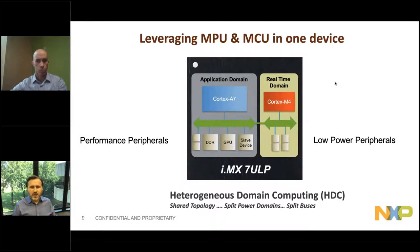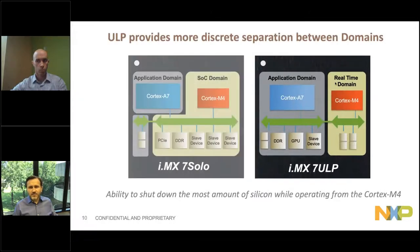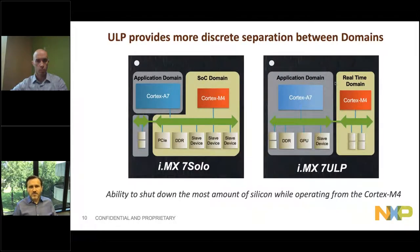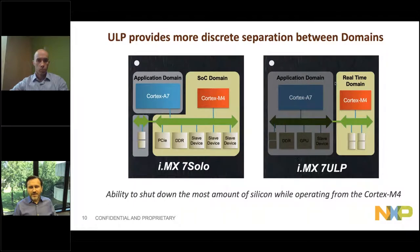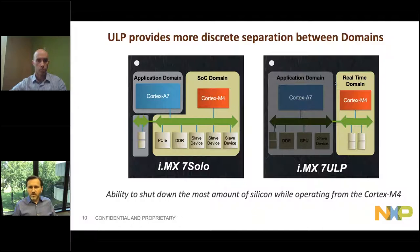This creates a heterogeneous domain computing architecture where we build domains around the cores, with separate buses, separate clocks, and separate power domains. How does this differ from our previous heterogeneous architectures? What we're trying to do is maximize the amount of silicon we shut down. We've given you the ability to run on the Cortex-M4 and really shut down the application domain. In the past, you could only shut down the Cortex-A7 domain. It's all about maximizing power efficiency.